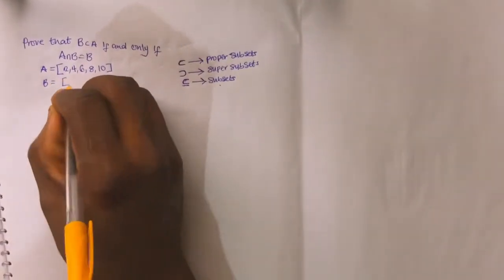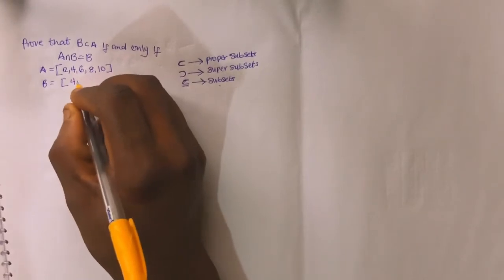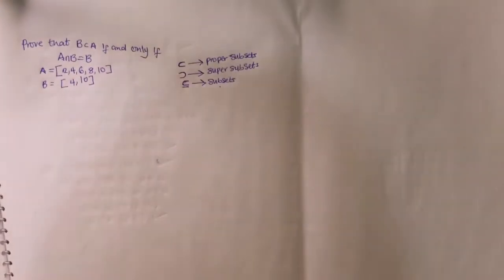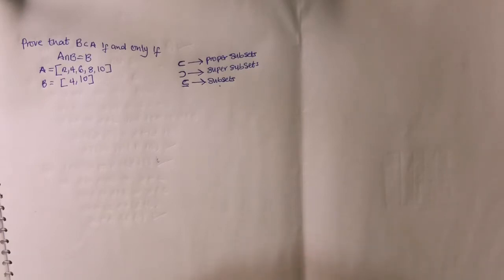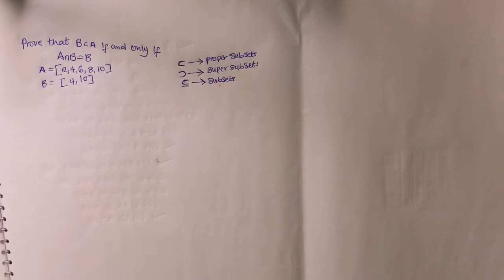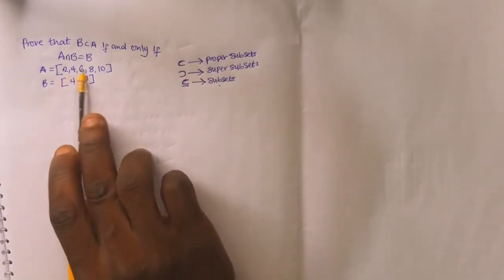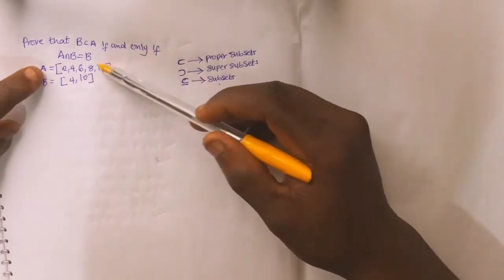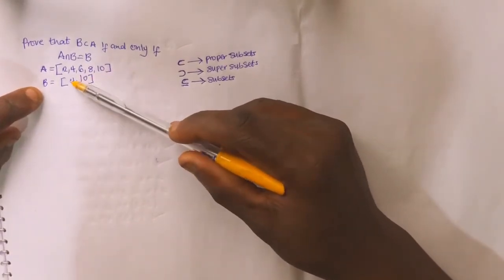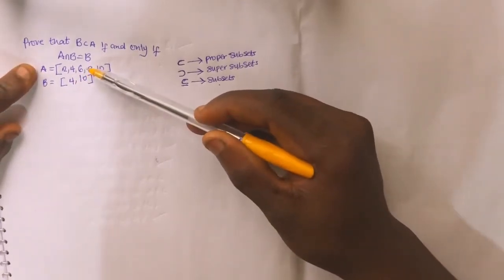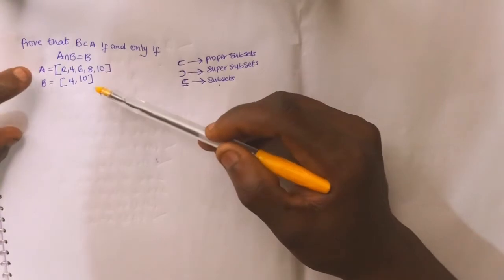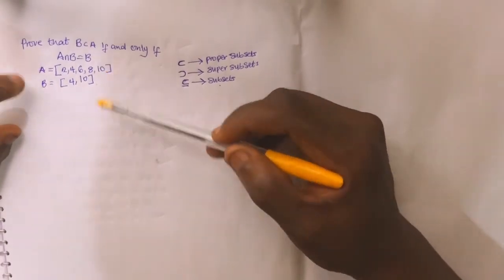That means my A is the set of even numbers. And my B — let's say B equals {4, 10}. According to the definition of proper subsets, a proper subset is a set in which at least one element can be found in the other set. Since I can find both 4 and 10 inside my set A, that means B is a proper subset of A. That is the proof.